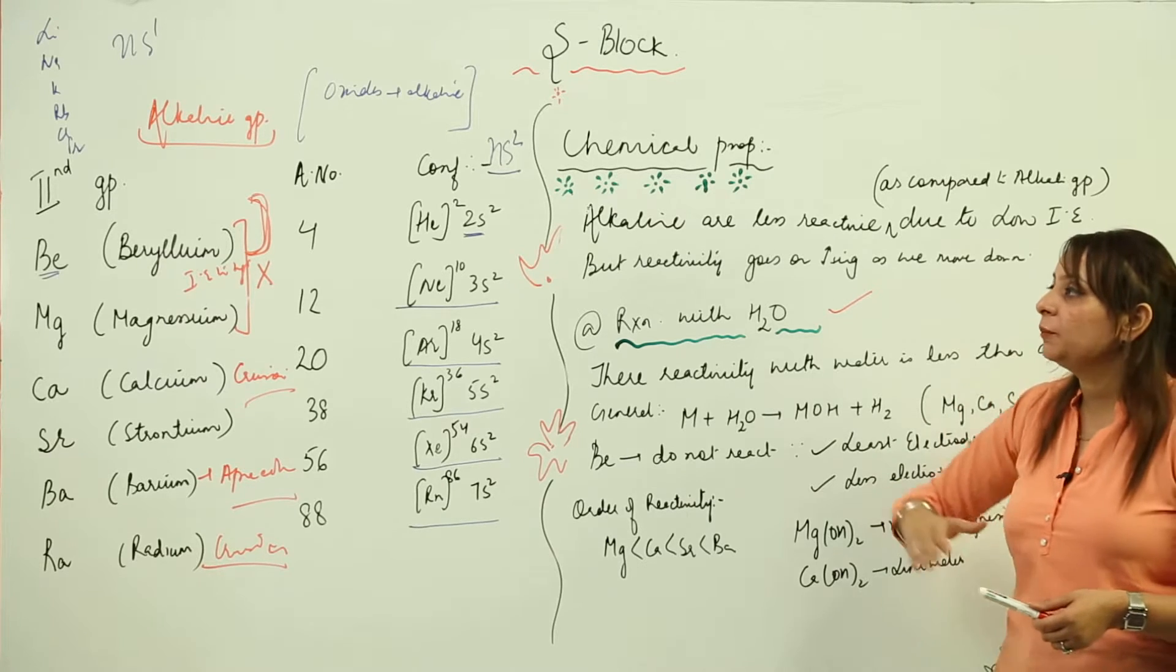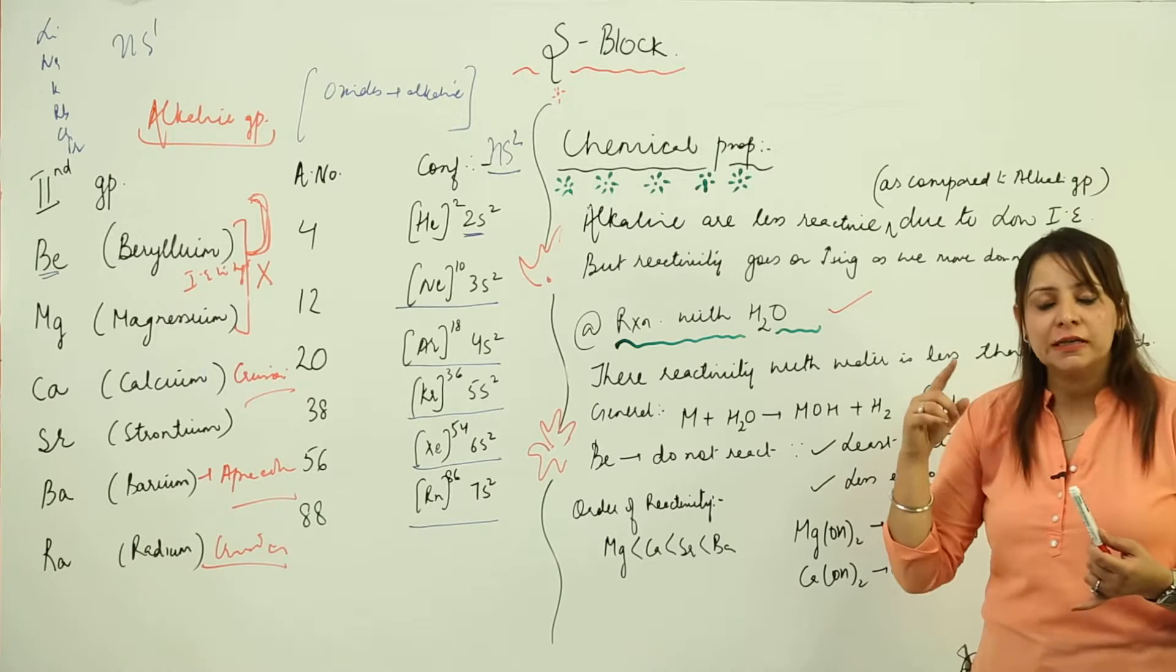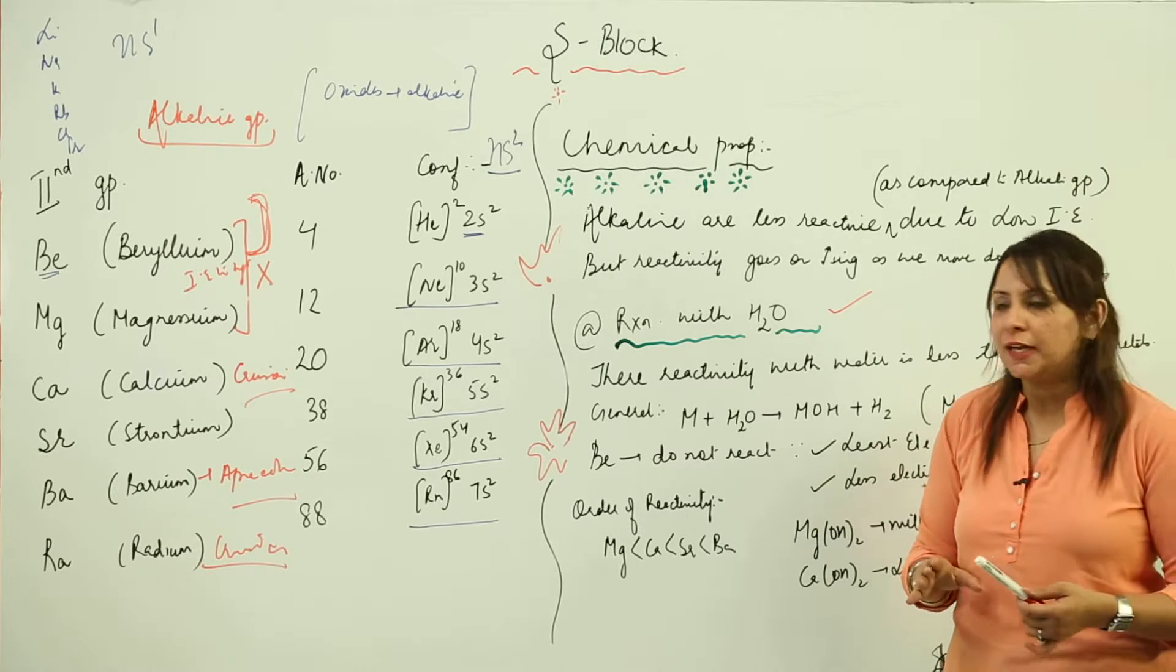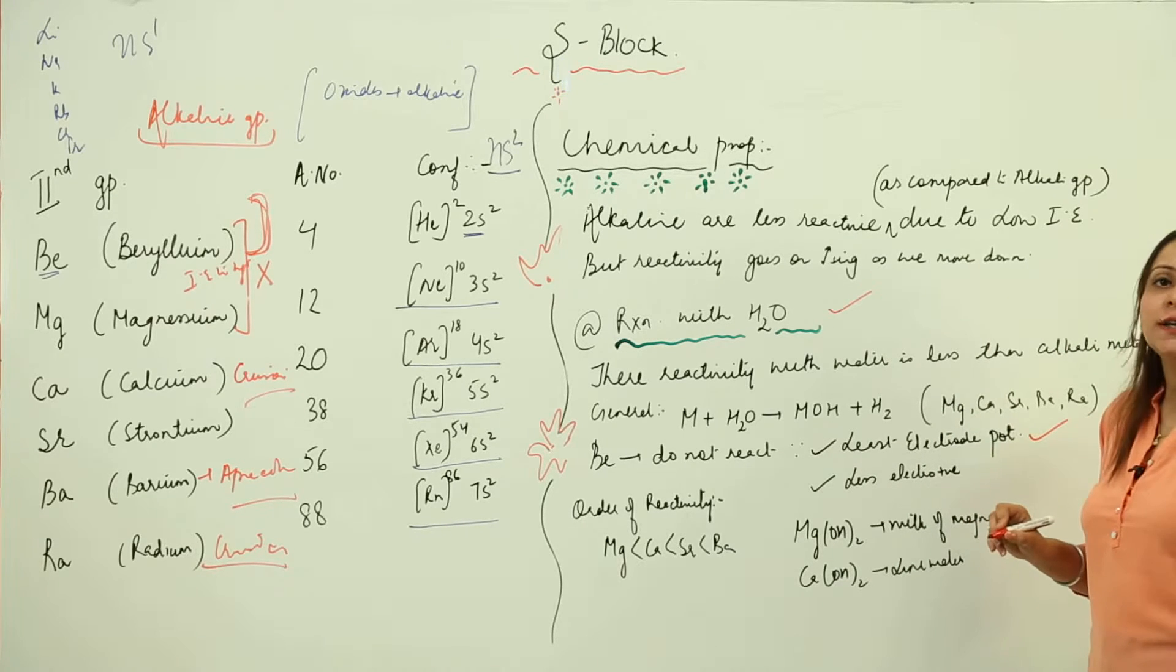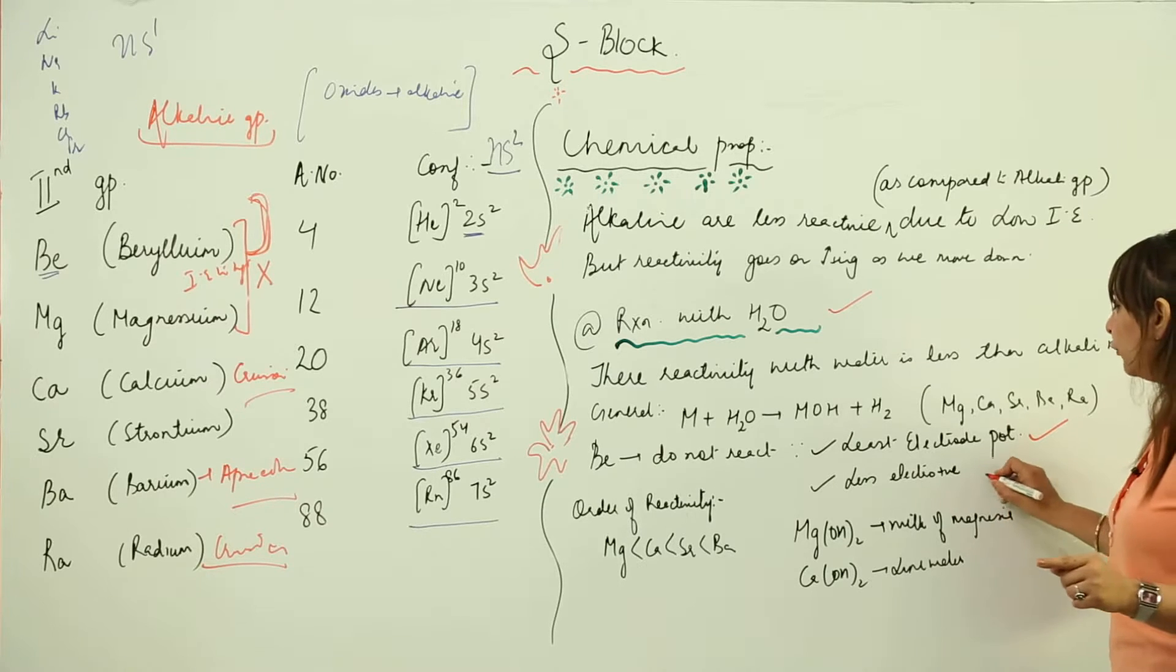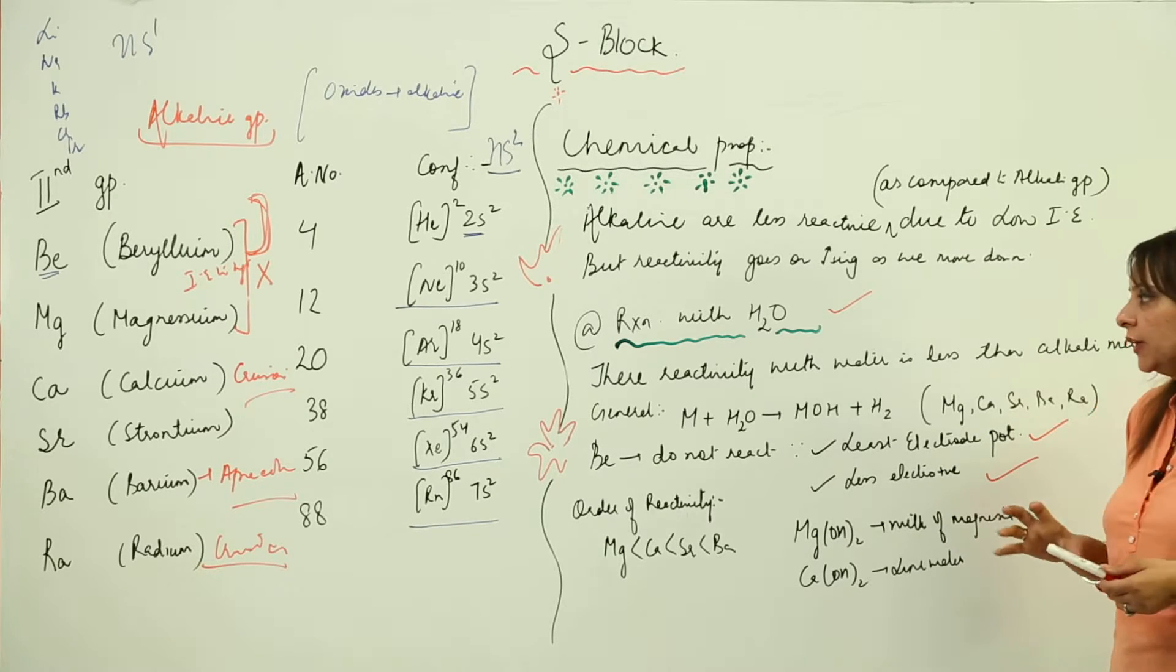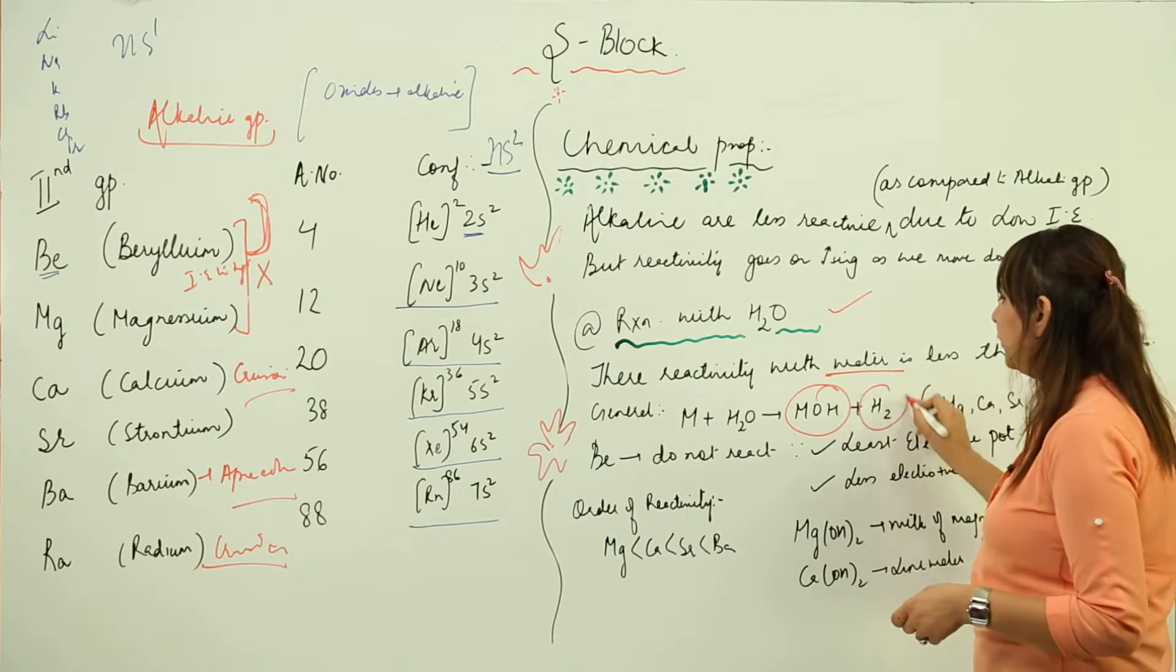You'll be surprised to know that beryllium does not react with water, even if it is boiling water or steam or cold water. It doesn't react with water in any circumstances. The reason being is that it has the least electrode potential, so it cannot displace hydrogen. Moreover, it is less electropositive due to small size and high ionization energy. But the rest of the members react with water, forming their hydroxide and liberating hydrogen gas.